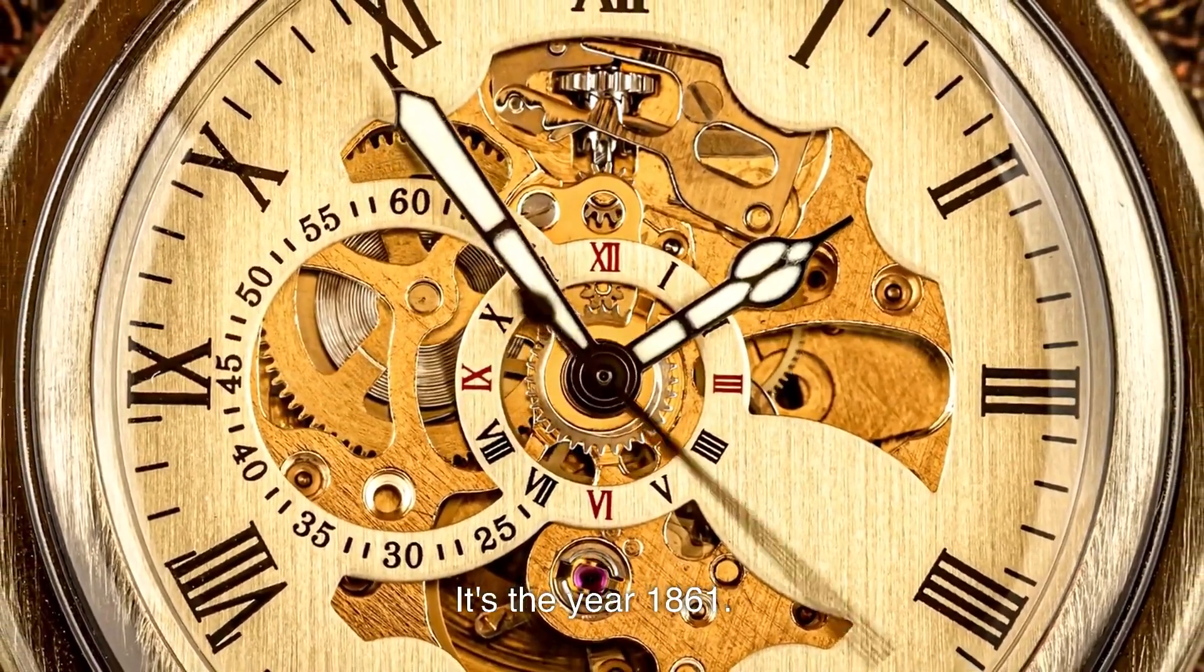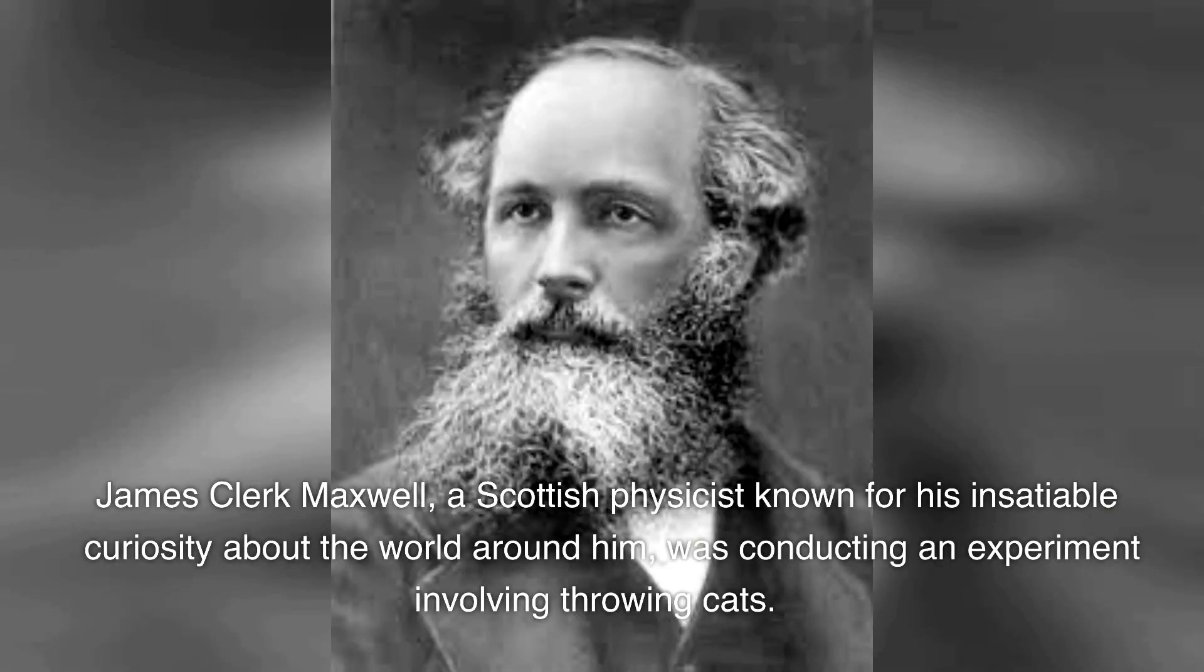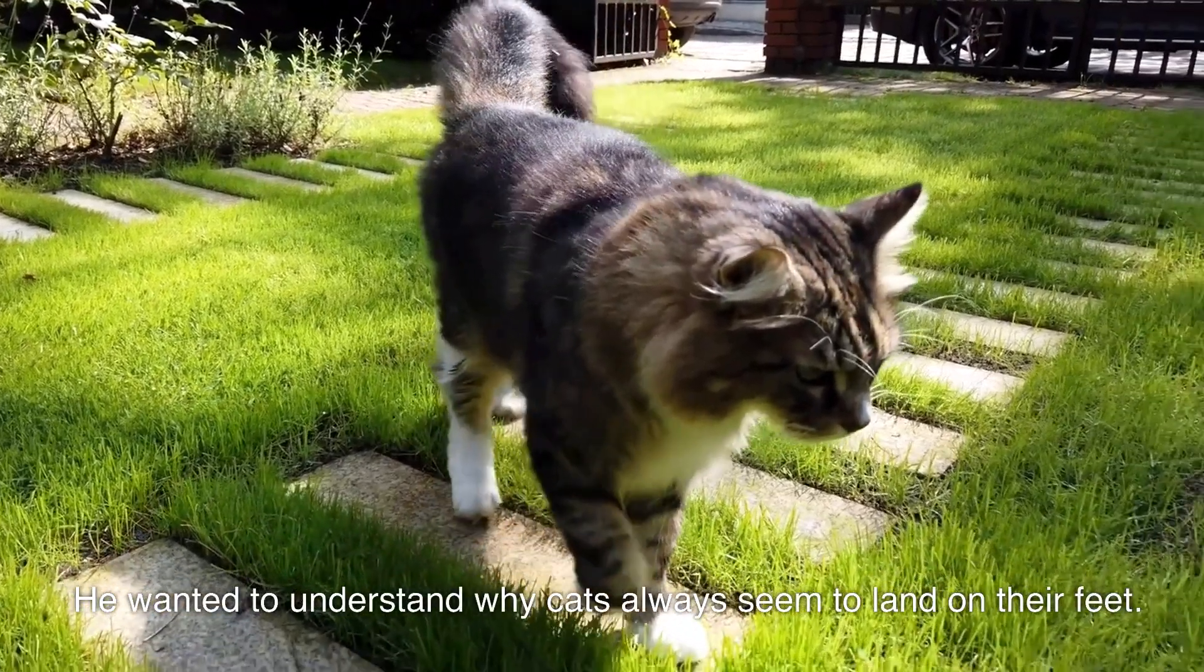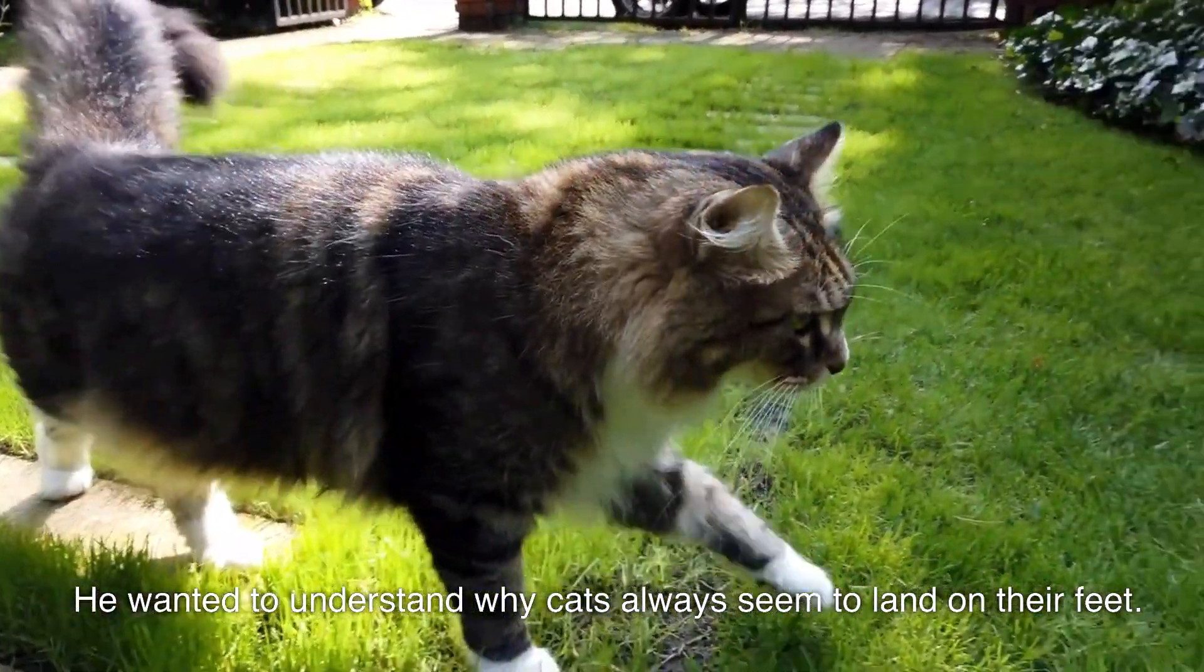It's the year 1861. James Clerk Maxwell, a Scottish physicist known for his insatiable curiosity about the world around him, was conducting an experiment involving throwing cats. He wanted to understand why cats always seemed to land on their feet, but soon he became distracted by a more fascinating phenomenon.